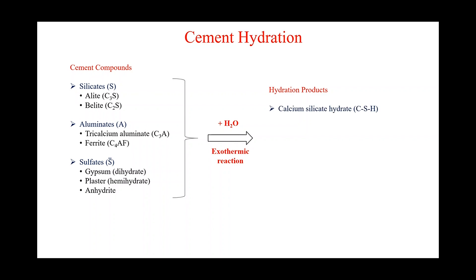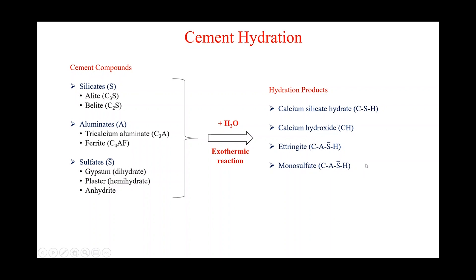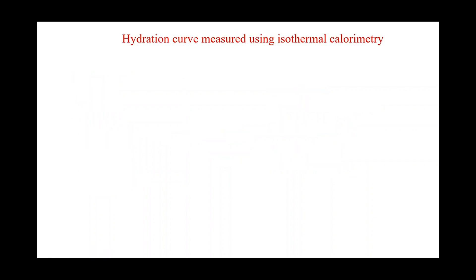The first hydration product is calcium silicate hydrate (C-S-H), which has a fiber-like structure and is the most important one — it gives strength to cement and concrete. The second is calcium hydroxide (CH), also called Portlandite, which has a crystalline structure. The third is ettringite, which is calcium aluminate sulfate hydrate — note the S-bar, indicating sulfate. The fourth is monosulfate, which has a similar formula. Ettringite is initially formed and then gets converted to monosulfate.